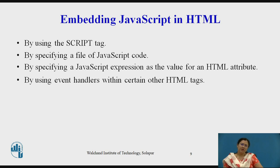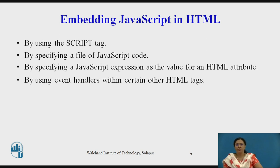Now we will see how to embed JavaScript in HTML. First, by using the script tag after the HTML tag. Second, by specifying a file of JavaScript code with a .js extension. Third, by specifying a JavaScript expression as a value for an HTML attribute. And last, by using event handlers within certain HTML tags.